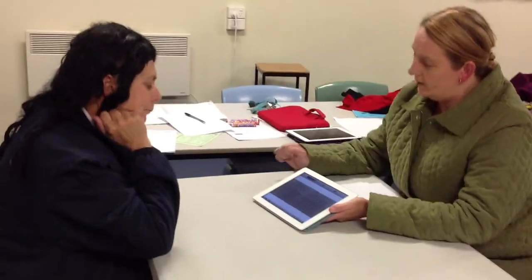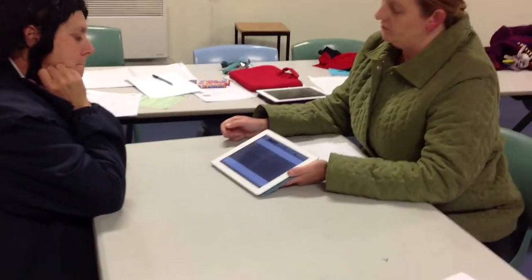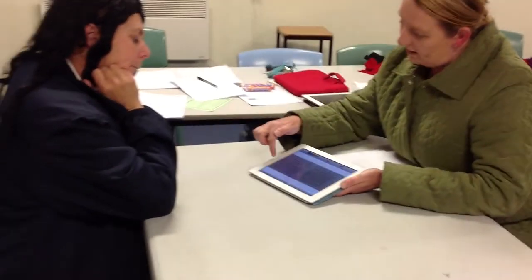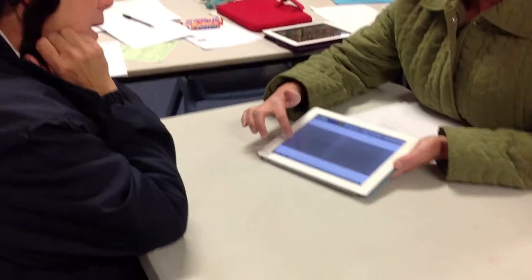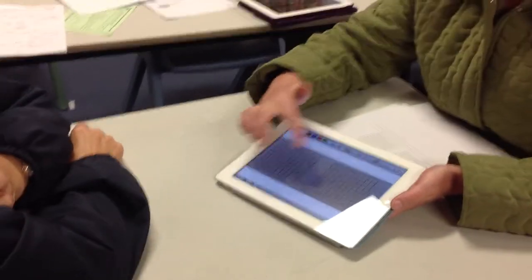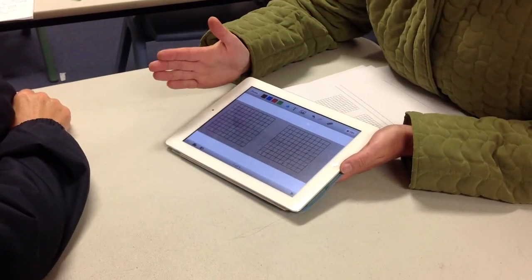Today we're going over what we learned yesterday about decimals. Now can you remember that this one square, which is 10 by 10, which is 100 parts, represents one whole.